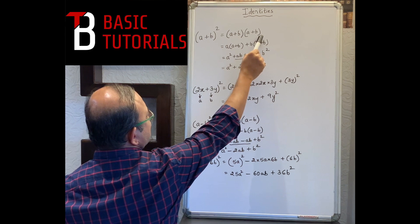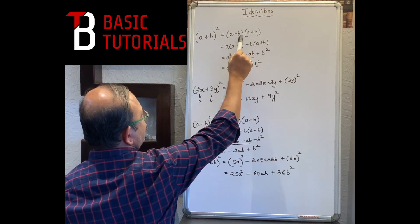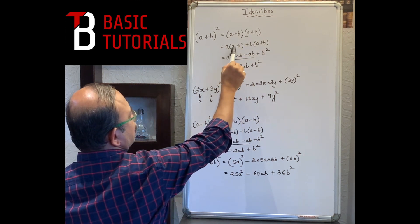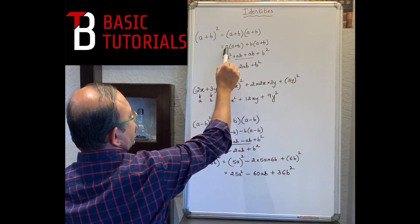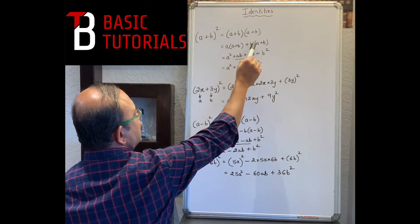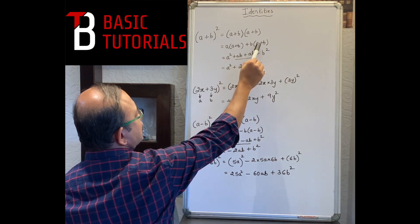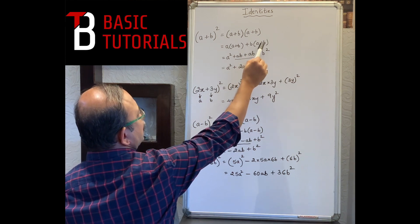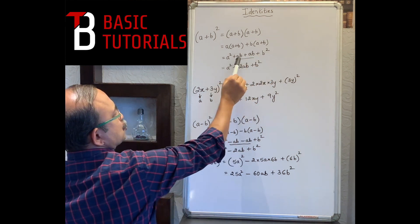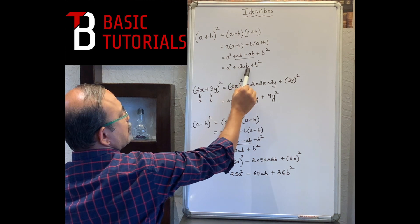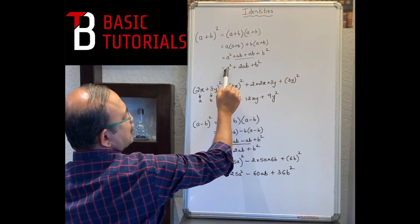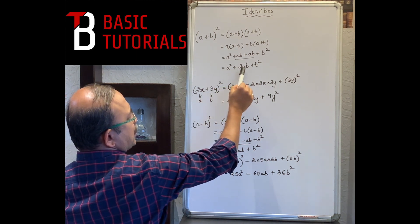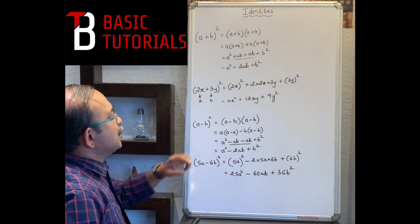Then you take b out and multiply b with the whole (a+b). So: a×a = a², a×b = ab, b×a = ab, and b×b = b². Since ab + ab = 2ab, we get the most important identity: a² + 2ab + b².